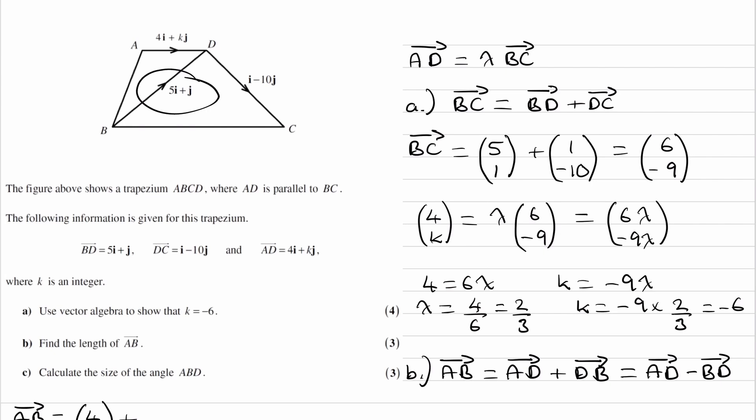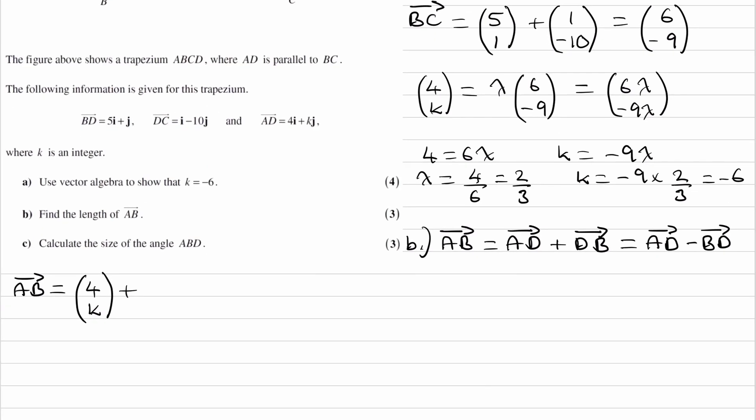BD was 5, 1. So then we're going to subtract instead of add, 5, 1.